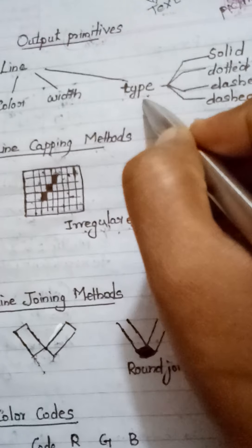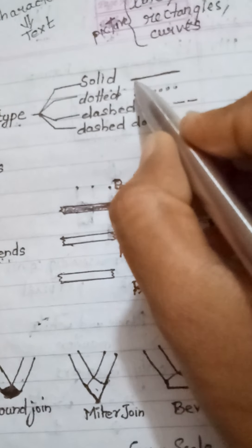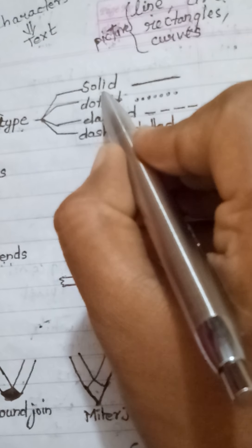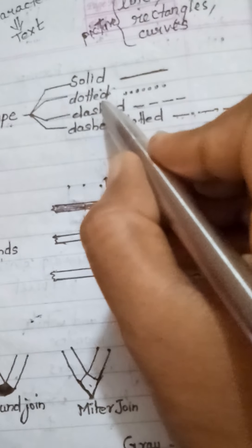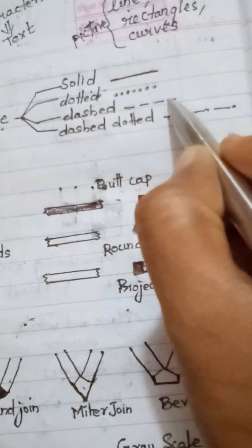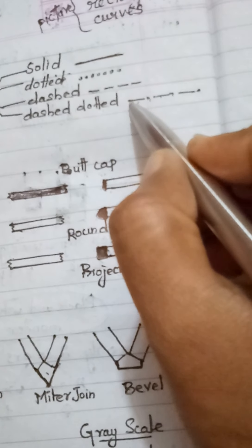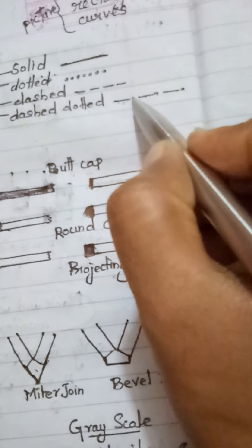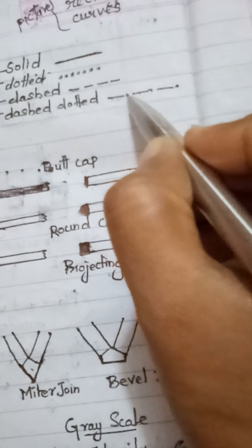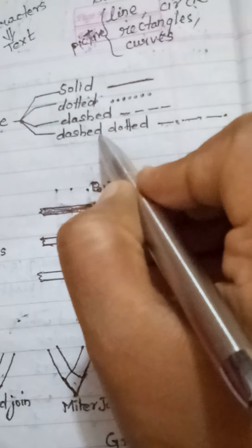The third attribute of the line is type. There are four different types: first is a solid line — a normal line drawn continuously. Second is a dotted line — a line drawn using a sequence of dots. Third is a dashed line — a line drawn with a sequence of dashes. Fourth is a dashed-dotted line — drawn using a dash and a dot alternatively.